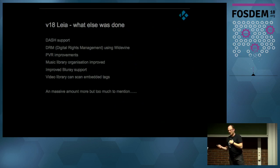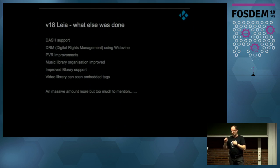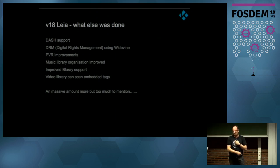PVR improvements — everyone's talking about cutting cable but no one really does that yet because there's no easy solution. We spent a lot of time improving this. Get a network tuner, plug it into your cable; most of the time you get just free channels from the air. You can now have all the guides, recording, auto-dumping recordings to your library, and rewatching.